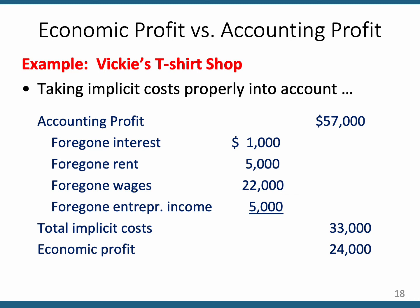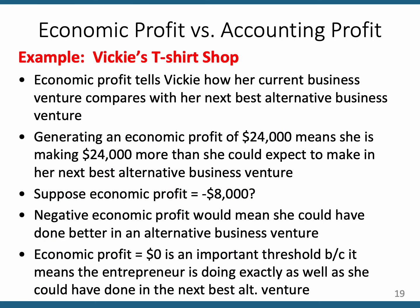That's still good — it's a positive number. As long as economic profit is a positive number, you're doing better in this business than whatever your next best business venture would have been. Economic profit tells you how your current business venture compares to the next best alternative. You're making $24,000 more than that alternative. If your economic profit is a negative number, that means you made the wrong decision. If it's exactly zero, you're doing exactly as well as you could have done in the next best alternative venture.